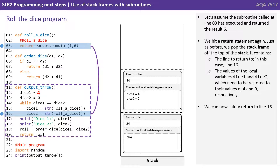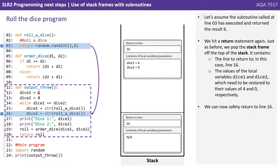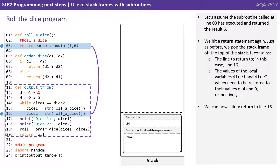Let's assume this time the subroutine called at line 3 has executed and returned the result 6. We hit a return statement again. Just as before, we pop the stack frame off the top of the stack, and it contains everything we need: the line to return to — in this case 16 — and the values of the local variables Dice1 and Dice2, which need to be restored to their values of 4 and 0 respectively. We can now safely return to line 16.